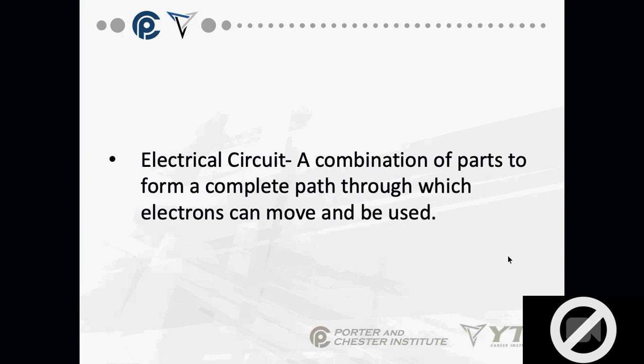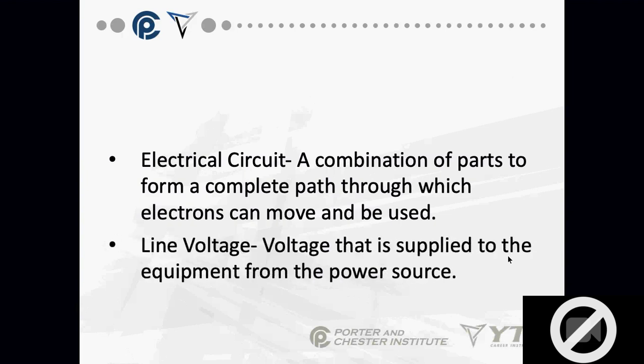An electric circuit is a combination of parts that form a complete path through which electrons can move and be used. A complete path is required. Line voltage is the voltage supplied to equipment from the power source. Your household outlets are line voltage — the outlet is the power source with respect to anything you plug in.